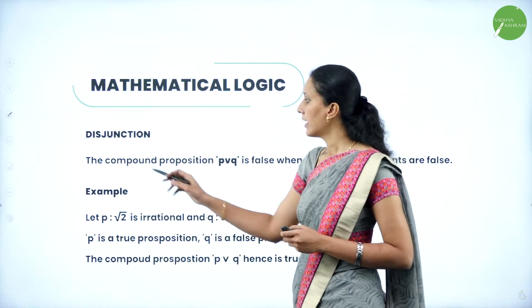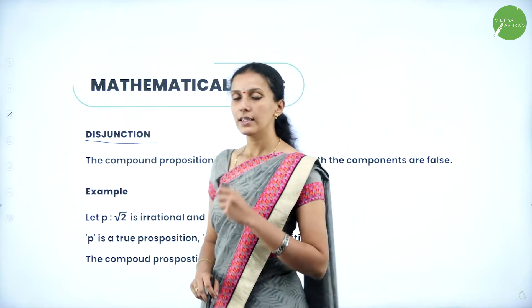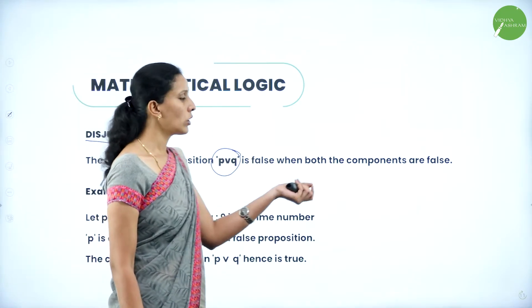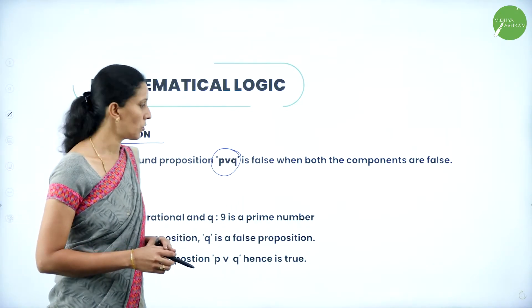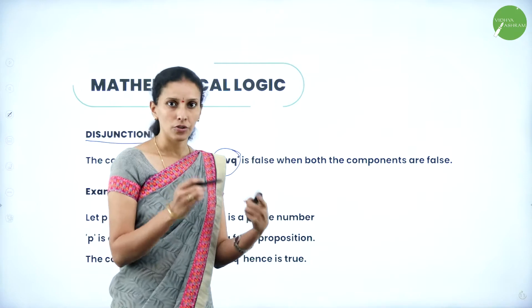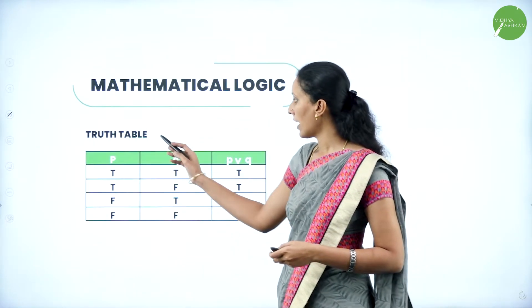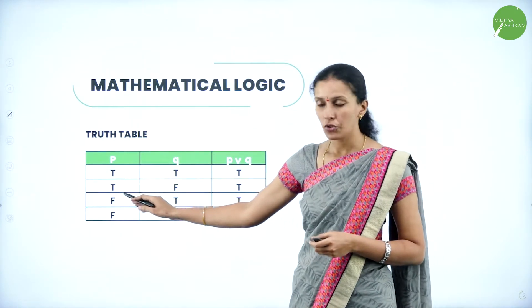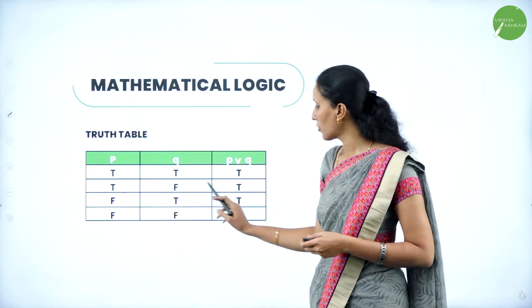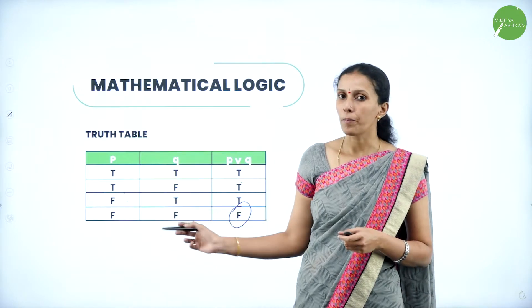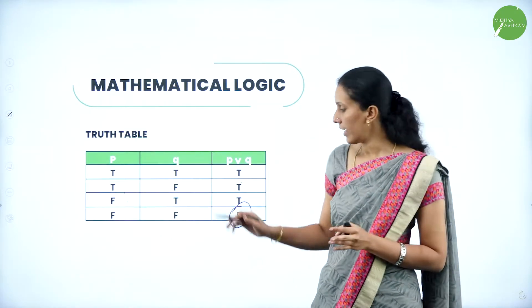The next connective is disjunction. The compound proposition P or Q is false only when both components are false — in all other cases it is true. Looking at the truth table for P or Q: when both are true it is true; when one is true and the other false it is true; and only when both are false is it false.